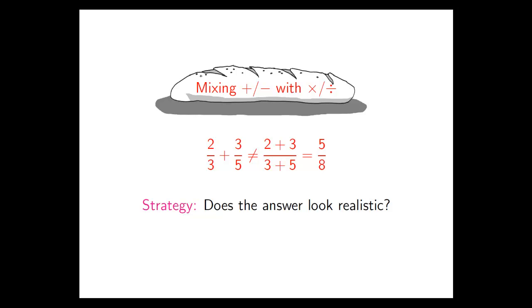Maybe you spotted the same thing that I did. Two thirds is bigger than a half. Three fifths is also bigger than a half of a full unit. Therefore, if we add those two numbers together, we should get an answer that's bigger than one. But we've got an answer that's smaller than one, five eighths. So a simple little bit of reality checking is going to go a long way. That tells us our answer is probably wrong.